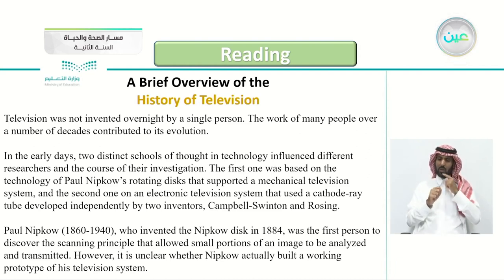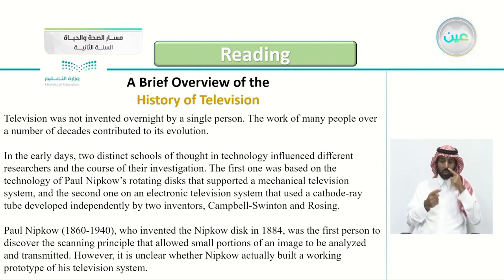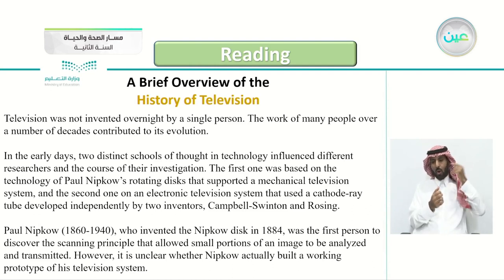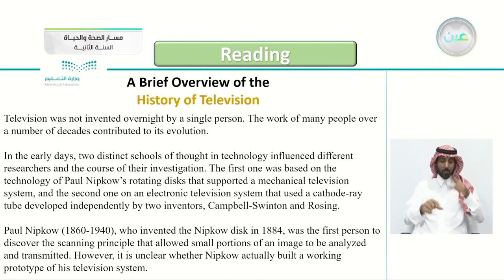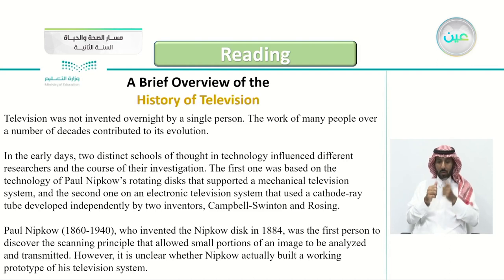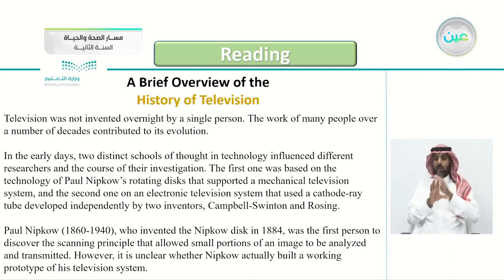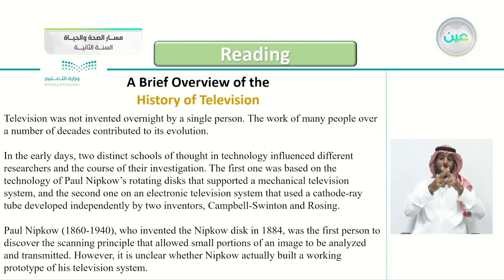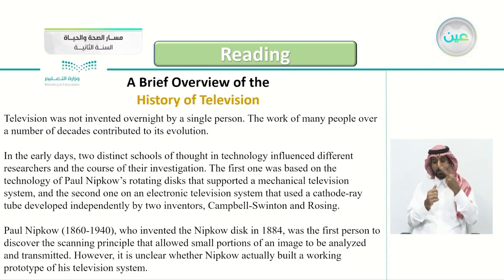Television was not invented overnight by a single person. The work of many people over a number of decades contributed to its evolution. In the early days, two distinct schools of thought in technology influenced different researchers. The first was based on the technology of Paul Nipkow's rotating discs, supporting a mechanical television system, and the second on an electronic television system using a cathode ray tube developed independently by two inventors, Campbell Swinton and Rosing.